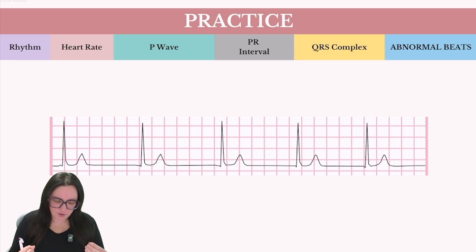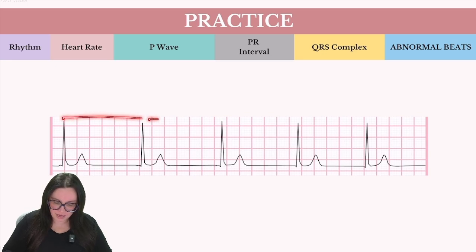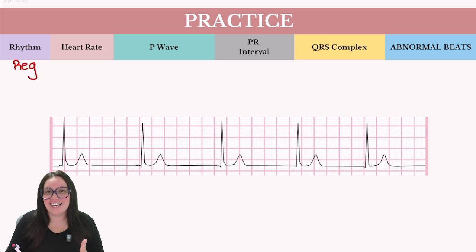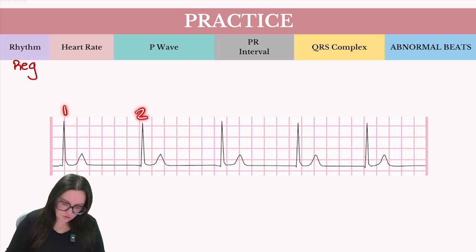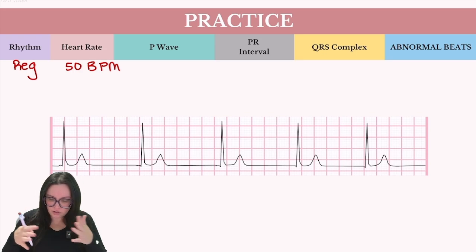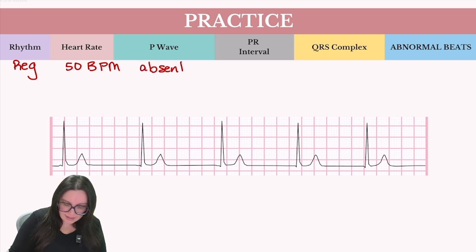Let's do some practice. Here is our first practice example. Do we have a regular or an irregular heart rate? If I was to measure from each R-to-R complex, they look exactly the same, so we have a regular heart rhythm. Next, we're going to look at our heart rate. We'll count the QRS complexes — we have approximately five, giving us about 50 beats per minute. Next, do we have any P waves? We have a flat line before each QRS complex, and we don't have any extra lines that would indicate P waves anywhere else.